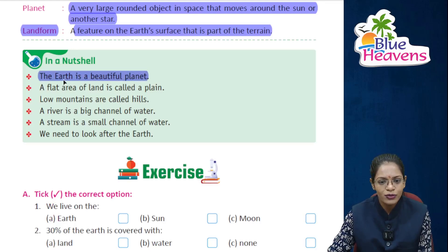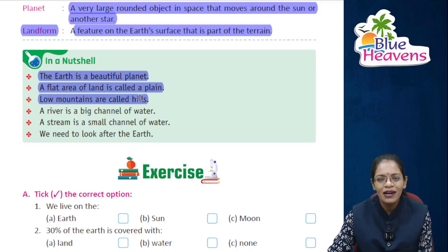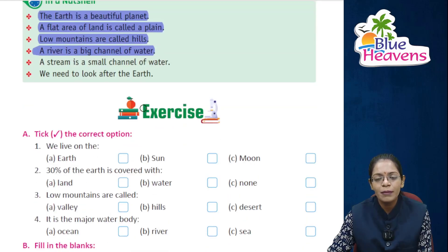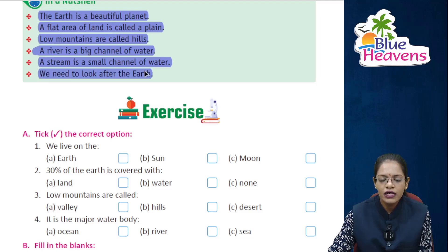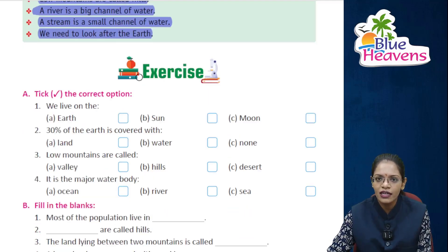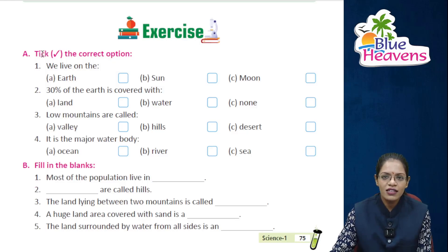In a nutshell: The Earth is a beautiful planet. A flat area of land is called a plain. Low mountains are called hills. A river is a big channel of water. A stream is a small channel of water. We need to look after the Earth.